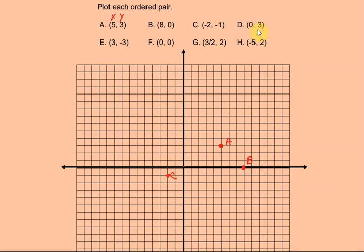Point D starts with 0, so for the x-axis I don't travel left or right. The 3 is how far I travel on my y-axis — it's a positive 3, so I go up 1, 2, 3 spaces on my y-axis and put a point. That is point D.